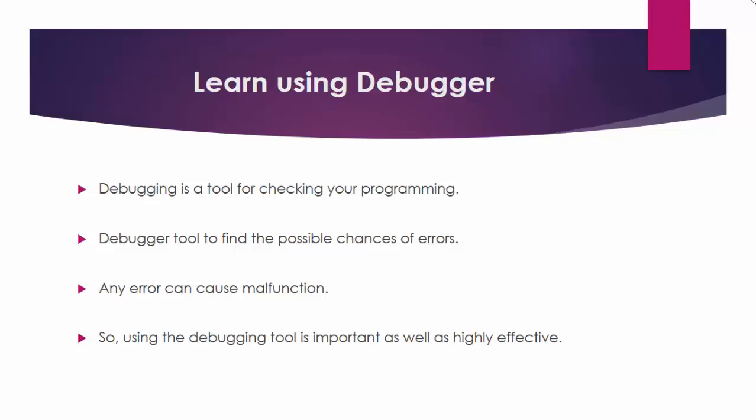Learn using Debugger. Debugging is a tool for checking your programming. When you have finished your programming structuring, you should use a Debugger tool to find the possible chances of errors. Any error can cause malfunction, thus you should be careful with your skills. No matter how vigilant you are, you are a human being after all. So, using the Debugging tool is important as well as highly effective for learning the C programming language.